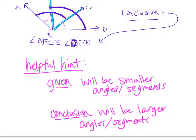Some helpful hints about the addition property: the given information will always be smaller angles or segments — like the smaller congruent angles or smaller congruent segments we were given in the examples. The conclusion will be the larger angles or segments that are congruent. You want to find what larger angles or segments are congruent when you add up the smaller ones you're given.